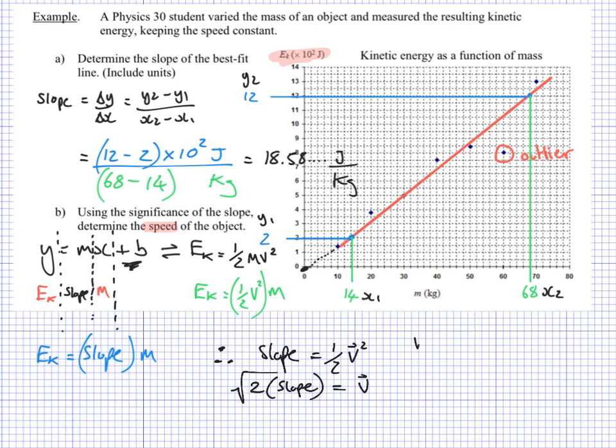So I'm going to get an answer here. My v is going to be the square root of two times my slope. Well, my slope is 18.58, lots of decimal places that I'm going to keep in my calculator. I'm going to keep these units in here. We'll take a look at those in a minute. And that means I get a value, if I put this into my calculator, of 6.0858 and so on. And at the moment, I've still got it in joules per kilogram, which doesn't really make sense because I'm supposed to be in meters per second.